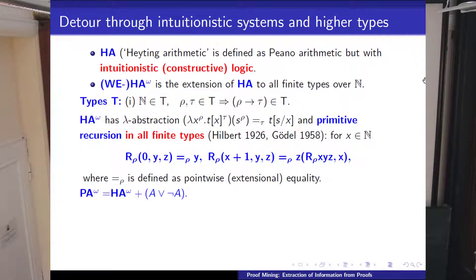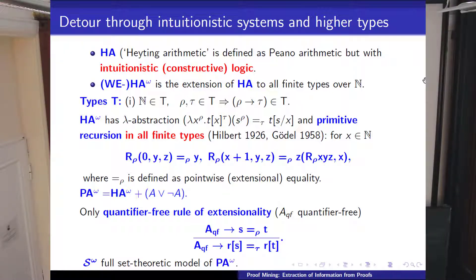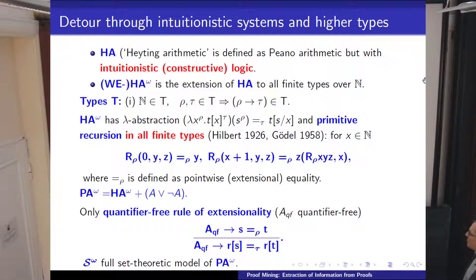When we add classical logic, we call this Peano arithmetic in all finite types. Otherwise, intuitionistic arithmetic is called Heyting arithmetic in honor of Arend Heyting, and denoted by HA-omega.